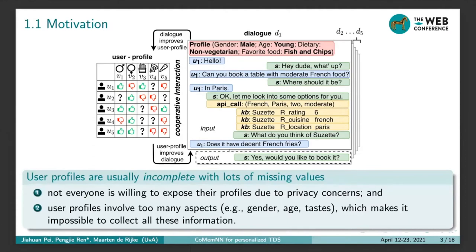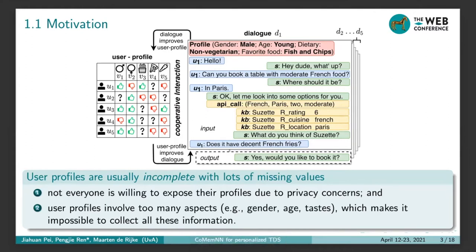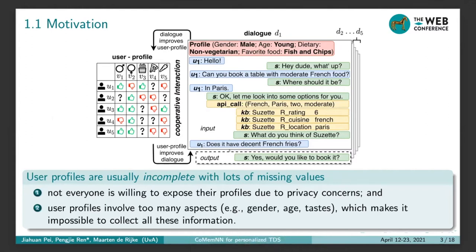Intuitively, user profiles are usually incomplete with lots of missing values. On one hand, not everyone is willing to expose their profiles due to privacy concerns. On the other hand, user profiles involve too many aspects, which makes it impossible to collect all this information. Our question is: is it possible to conduct personalized dialogues with incomplete user profiles in this cooperative paradigm? Just as it shows in the figure, dialogue helps to enrich user profiles gradually, and user profiles improve the dialogue, vice versa.